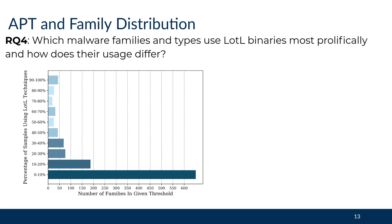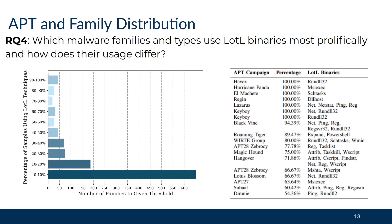Our fourth research question is which malware families and types use living off the land binaries most prolifically, and how does their usage differ? Using the state-of-the-art tool AV class to classify samples into families, we can see that only a small number of families have a high percentage of their samples using these techniques, while conversely a large number of families have a small percentage. Living off the land usage was over twice as common in APT datasets as in commodity malware. Some notable APT malware campaigns use living off the land techniques in a very large percentage of their samples, and those APT groups that use these binaries do so across multiple campaigns.